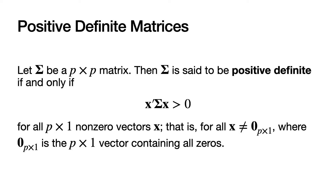CAP-SIG is said to be positive definite if and only if the quadratic form given by X-prime times CAP-SIG times X is strictly greater than zero for all P by one non-zero vectors X. In other words, for all P by one X vectors that are not equal to the zero vector, where zero subscript P by one is the P by one vector containing all zeros.